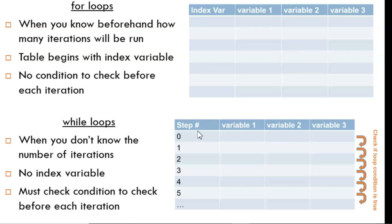With the for loop, the left column is named index variable, which is an actual variable in the code, and it takes on predetermined values that can be filled in immediately.